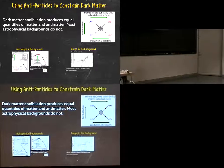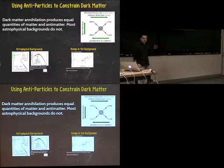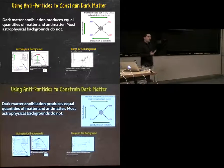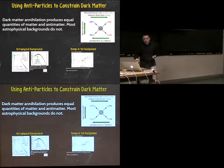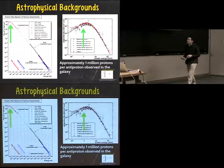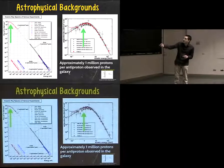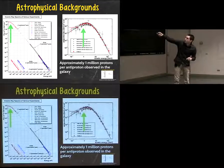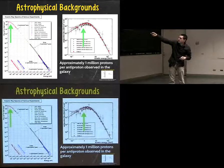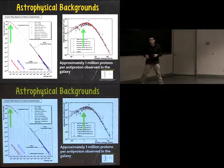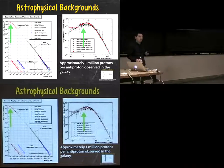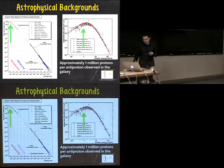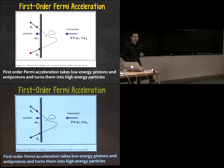So how can we use this to constrain dark matter annihilation? The key is antiparticles. Dark matter annihilation produces almost equal quantities of matter and antimatter in every event. Astrophysics, on the other hand, accelerates and produces particles that are mostly matter, because matter is what's mostly in our galaxy. If we look at the astrophysical background flux, we observe about 10 to the 4 protons per second but only about 10 to the minus 2 antiprotons per second—for every antiproton we observe on Earth, we get a million protons. That's the ratio astrophysics tends to produce: mostly matter particles with very little antimatter.